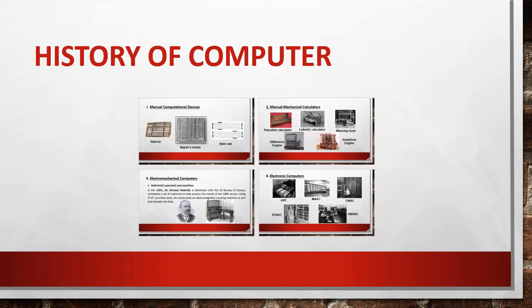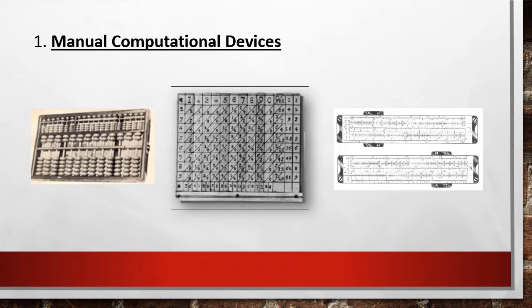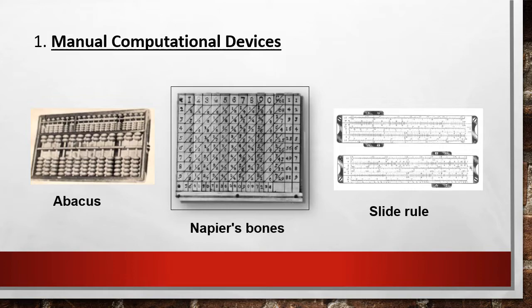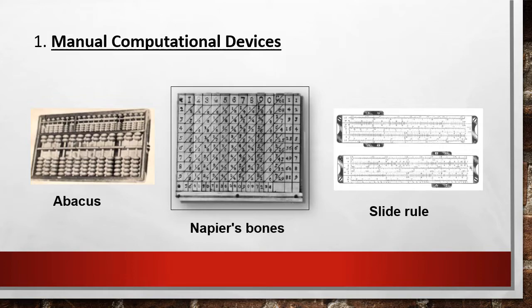Now let's proceed with the history of computers. Number one: manual computational devices. We have the abacus, Napier's bones, and slide rule. The abacus was used in Babylon over 5,000 years ago, 2,000 years before the Greeks used it to help with calculating. It was also used in Europe, China, and Russia, but its exact origin is still unknown. To use it, we slide the beads up and down on the rods to add and subtract.